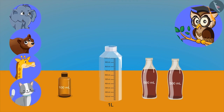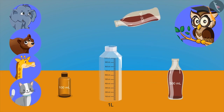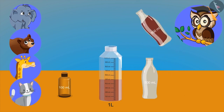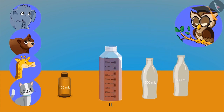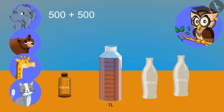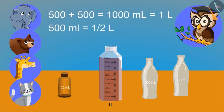Now try to put this in the empty bottle of one litre. Oh, it became full now. Yes. So, what have we learned from this? Two five-hundred-millilitre bottles make a litre. Yes, right. Adding five hundred millilitres to five hundred millilitres gives us one thousand millilitres. Five hundred ml is also known as half a litre.